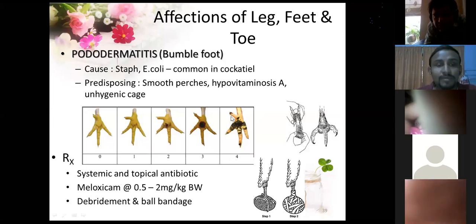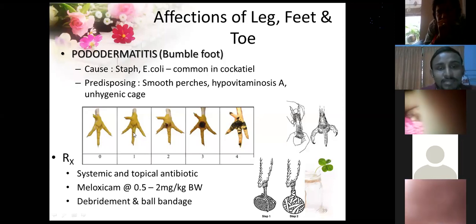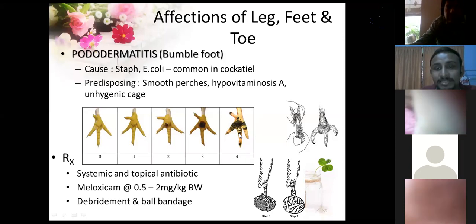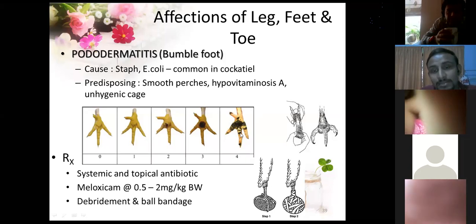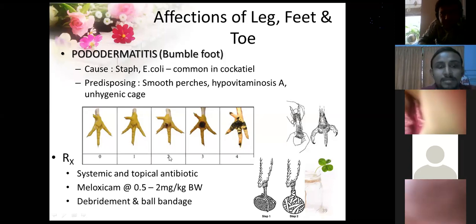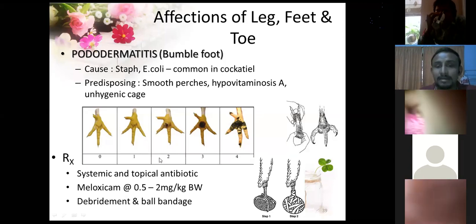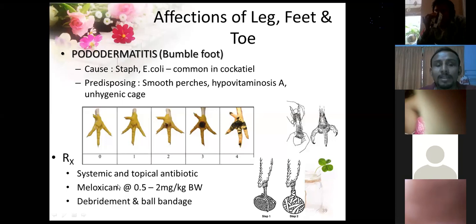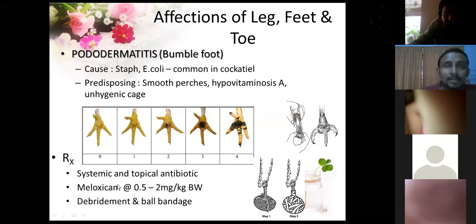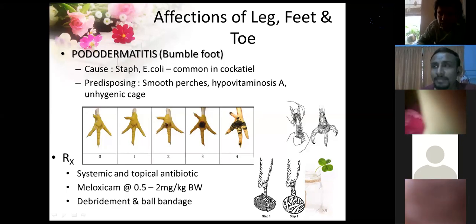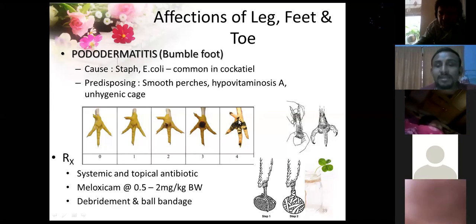Bumblefoot can be graded — from slight excoriation at grade 1 to severe lesions. You need to go for systemic antibiotics as well. For pain relief, meloxicam is a very safe painkiller that can be used for most bird species without complications at a dose of 0.5 to 2 mg per kg body weight. In severe cases you have to surgically debride, apply bandage, and start wound care.